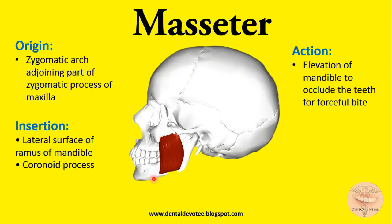Now let's move on to the masseter muscle. The masseter muscle originates from the zygomatic arch and the adjoining part of the zygomatic process of the maxilla. Its insertion is on the lateral surface of the ramus of the mandible and also on the coronoid process.